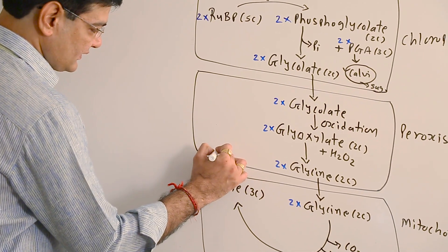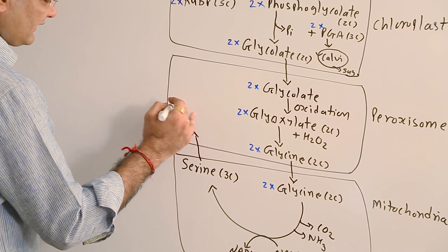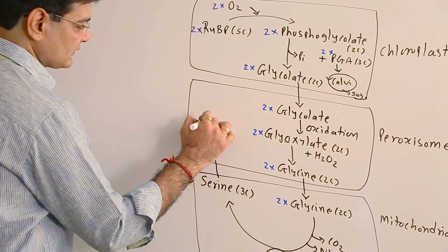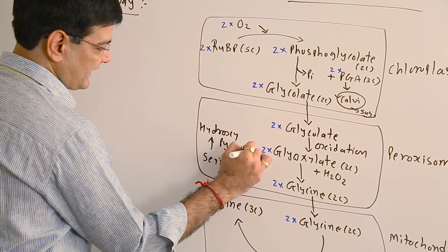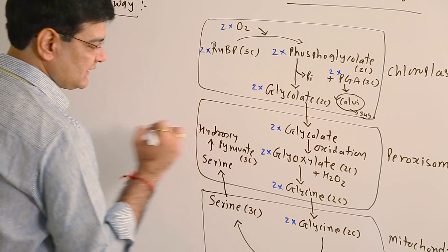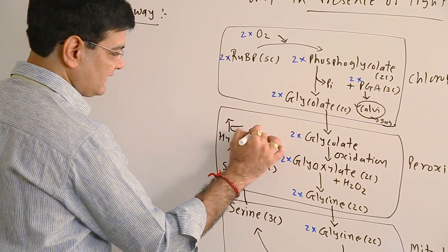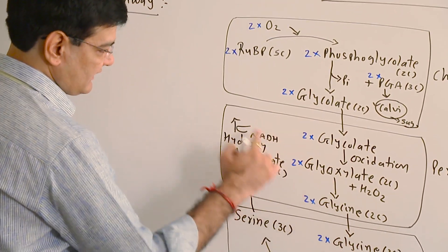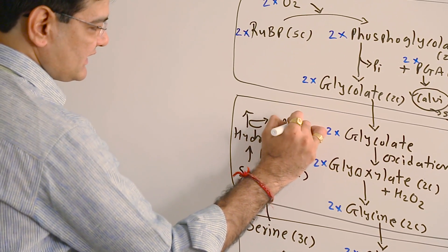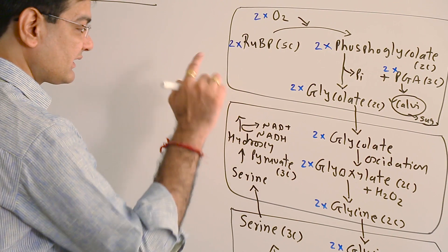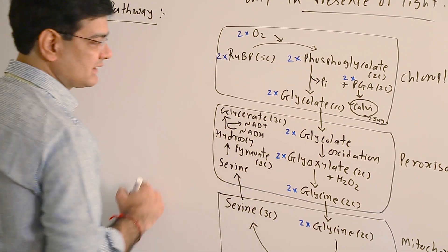This serine diffuses out from the mitochondria and enters into the peroxisome, where it gets transformed into hydroxypyruvate. This hydroxypyruvate later on reacts with NADH, which forms in the mitochondria and is now utilized in the peroxisome. NADH converts to NAD+ and hydroxypyruvate gets transformed into glycerate, containing three carbons.